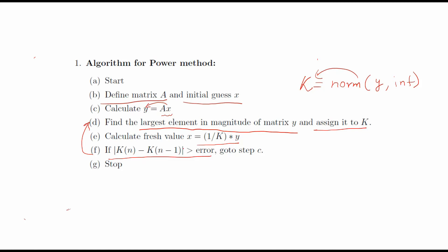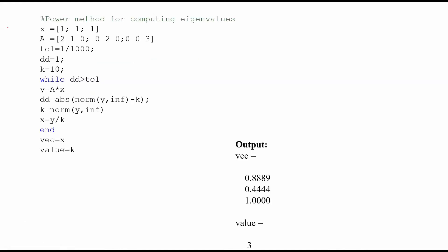So let's see the MATLAB code. This is the MATLAB code for the power method. You have started with the initial condition x and this is the value of A for which you want to find the largest eigenvalue. You wish to find the largest eigenvalue of this A.